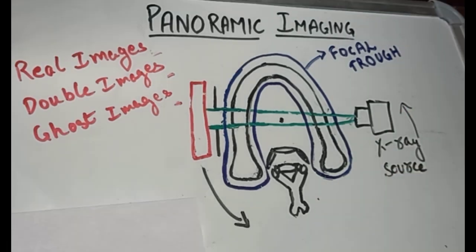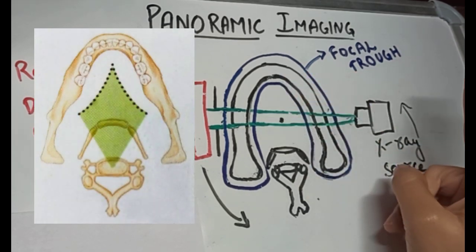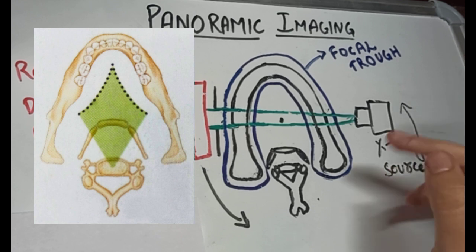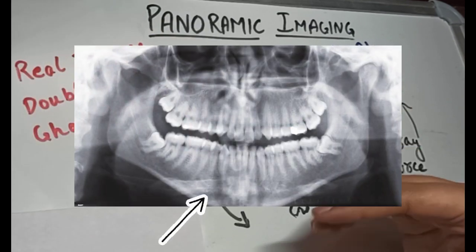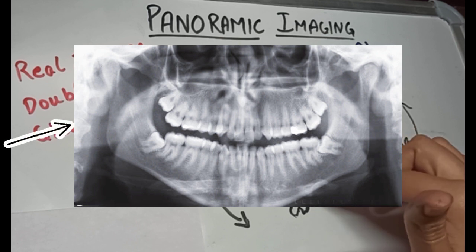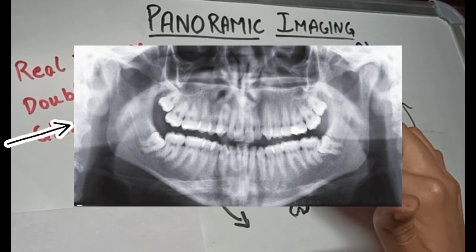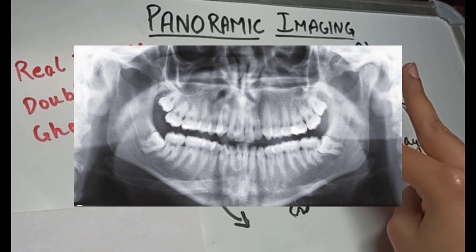Objects that lie posterior to the center of rotation and are intercepted twice by the x-ray beam form double images. For example, the hyoid bone, the epiglottis, and the cervical spine all cast double images because they are intercepted twice by the x-ray beam.